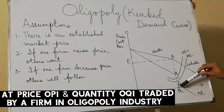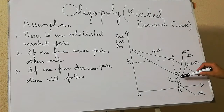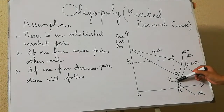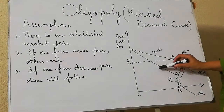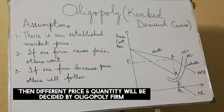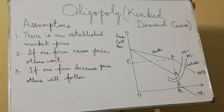Whenever the MC curve cuts the MR curve within this discontinuous part, the price P1 is charged by the firms in the industry and the quantity Q1 is supplied to the customers. As long as MC cuts MR within this discontinuous segment — whether MC shifts up or down — the price and quantity remain the same. Only if MC cuts MR outside this discontinuous part will we get a different price and output determination.